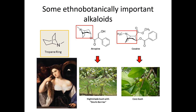Other ethnobotanically important alkaloids include atropine and cocaine. Atropine comes from belladonna — in the 1600s, women would put drops of this compound in their eyes to dilate them, making their eyes look big and dark, which was considered attractive at the time. Hence the plant became known as belladonna, meaning 'beautiful woman.'